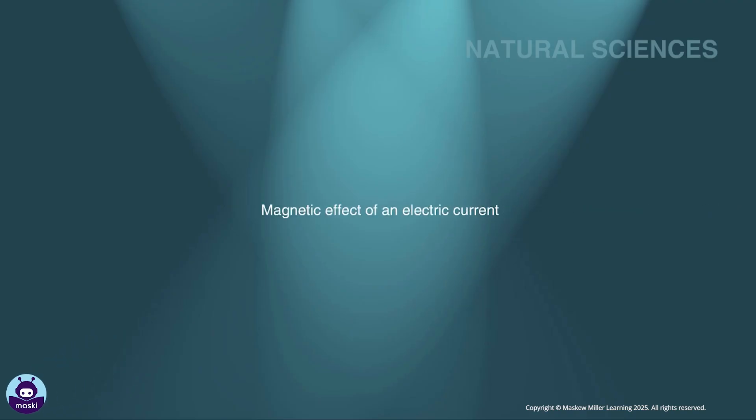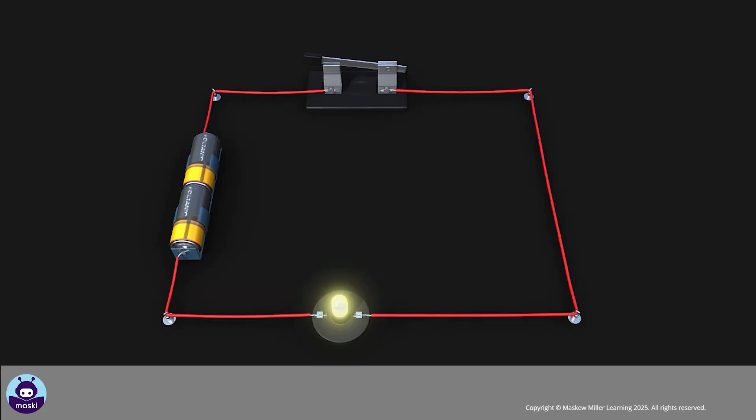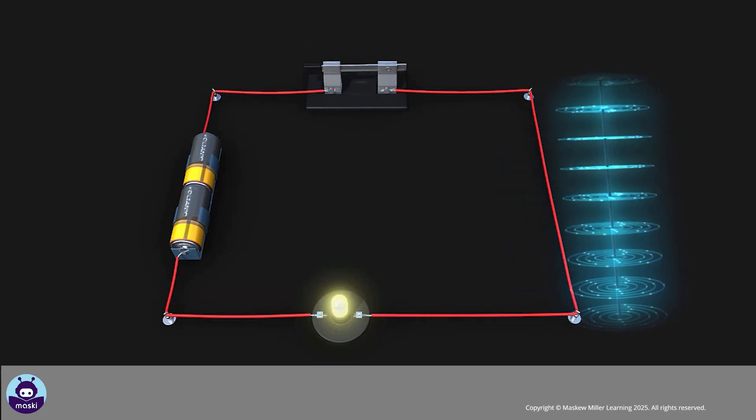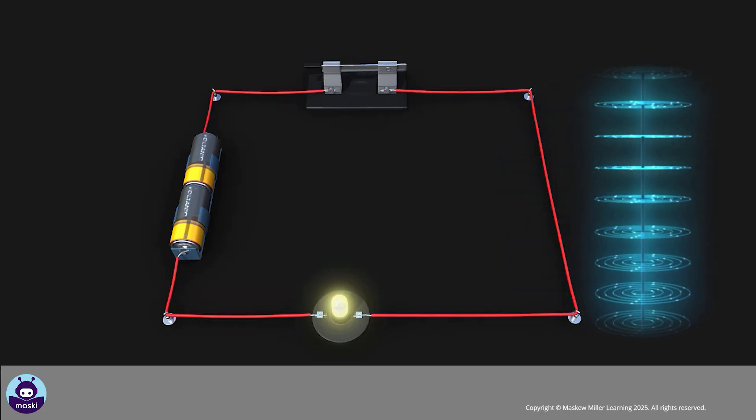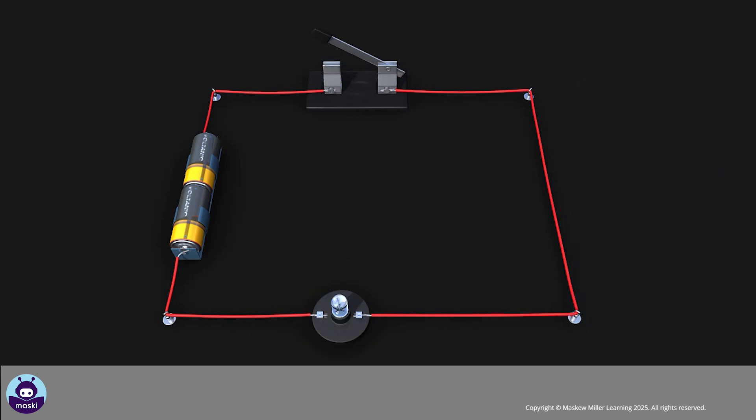Magnetic effect of an electric current: When an electric current flows through a conducting wire, a magnetic field is created around the wire. We can demonstrate this by placing a magnetic compass over the wire when a current passes through the wire.